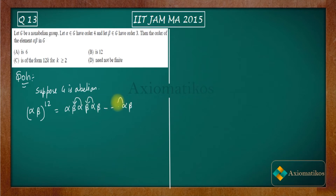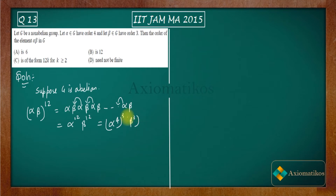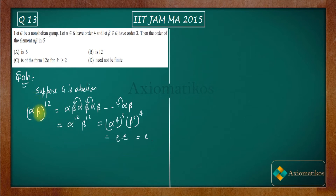Shifting alpha to the left-hand side, you end up with alpha to the power 12 times beta to the power 12. Now alpha to the power 12 equals (alpha^4)^3, which is identity, and beta to the power 12 equals (beta^3)^4, which is also identity. So you get identity. This means in an abelian group, the order of the product always divides 12 — it is always finite — so option D is discarded in the abelian case.